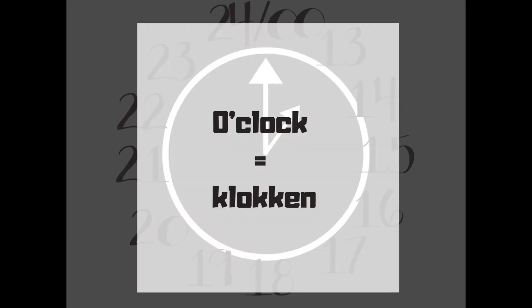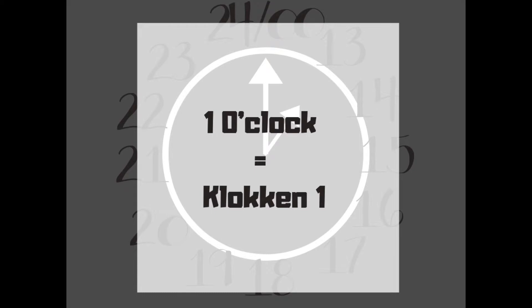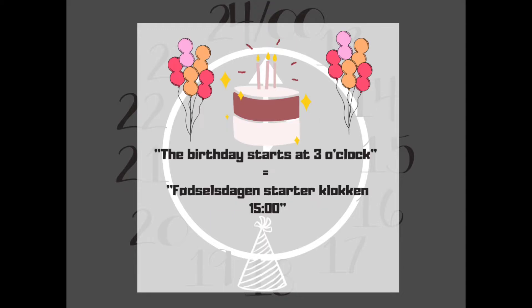When the Danes talk about the time they say klokken, which means 'a clock.' So one o'clock is klokken et. An example could be: the birthday starts at 3 o'clock, and that will be translated into klokken 15.